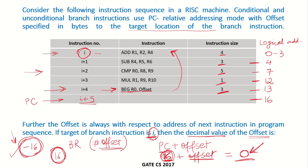So the program counter containing a value of 16 plus minus 16 gives a value of 0. That means the program counter will now have 0 and the next instruction would be fetched from instruction I, which is at address 0.